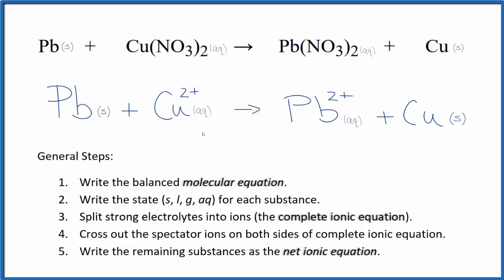So the charge is the same on both sides as well. This is Dr. B with the balanced net ionic equation for Pb plus Cu(NO3)2. Thanks for watching.